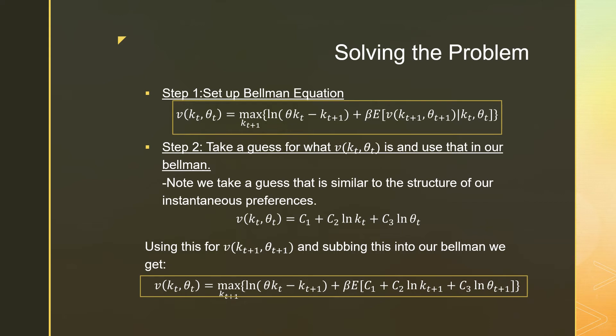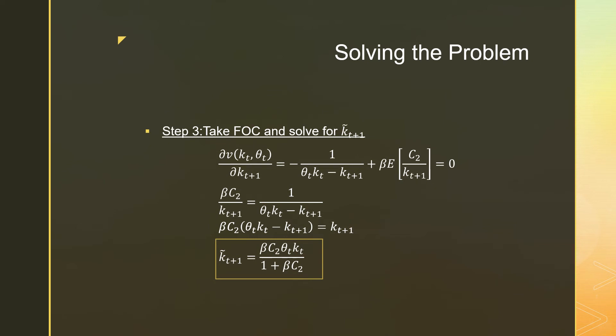Step number two is we're going to take a guess for what this value function is and then we're going to settle it into our Bellman. So in this context, we're going to use this log function, which is going to be C1 plus C2 ln KT plus C3 ln theta T. Using this for V KT plus 1, theta T plus 1 and summing it into our Bellman, we get the following, which is a nice result, which we will see later.